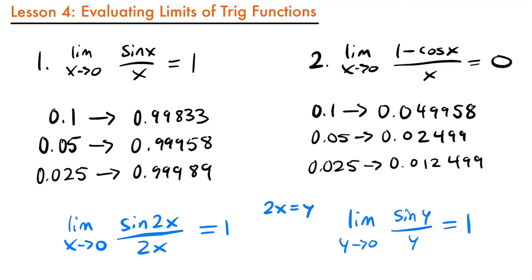So this term could be anything — 3x, 4x, 5x — that coefficient isn't going to matter as long as the argument of sine and the denominator are the same. If you got rid of one of those matching terms, then you'd have a problem and would need to do some manipulating. However, as long as they match, it's still an equivalent form equal to 1. This would also be true for our special cosine limit — it would still equal 0, not 1.